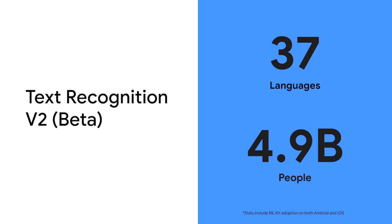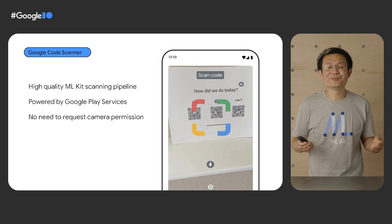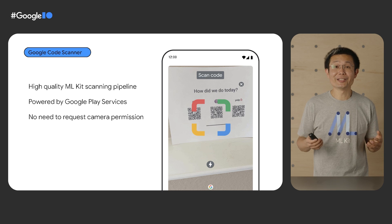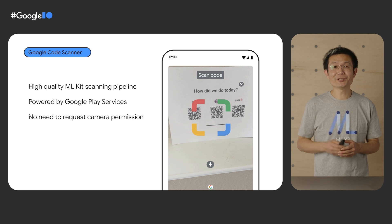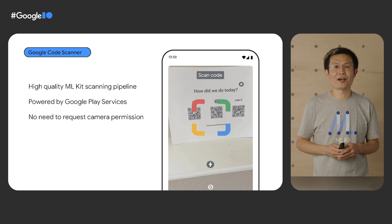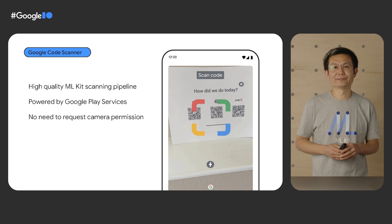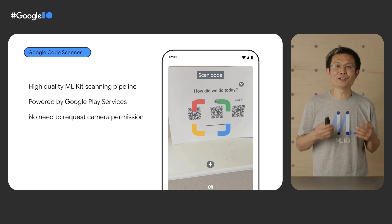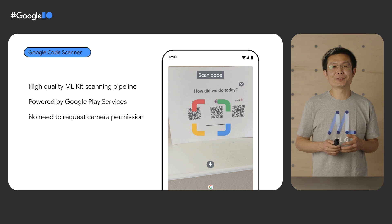Thanks to the new script support, Text Recognition V2 beta can now cover 37 languages, representing over 4.9 billion people worldwide. We also looked for ways to make it easier to integrate ML Kit into your app. The new Google Code Scanner API, powered by Google Play services, utilizes the latest ML Kit scanning technology. Using this API, apps can request that Google scans the barcode, QR code, and other codes on their behalf and returns results without needing to request a camera permission or processing the image within the app. This makes it quicker and easier to integrate code scanning features into your app, while reducing users' concern about having to grant camera permissions that can limit feature usage.